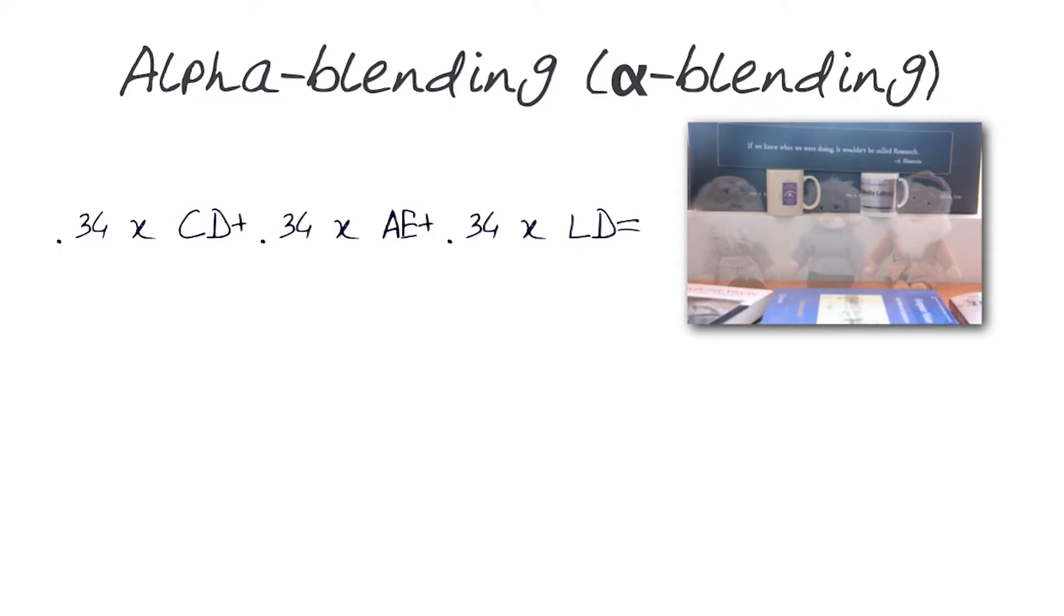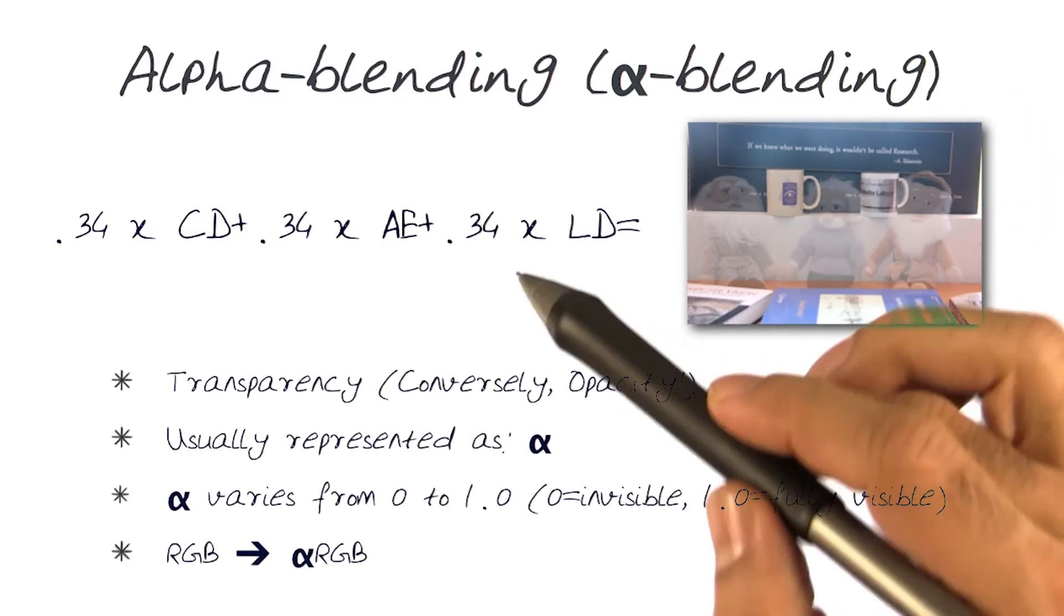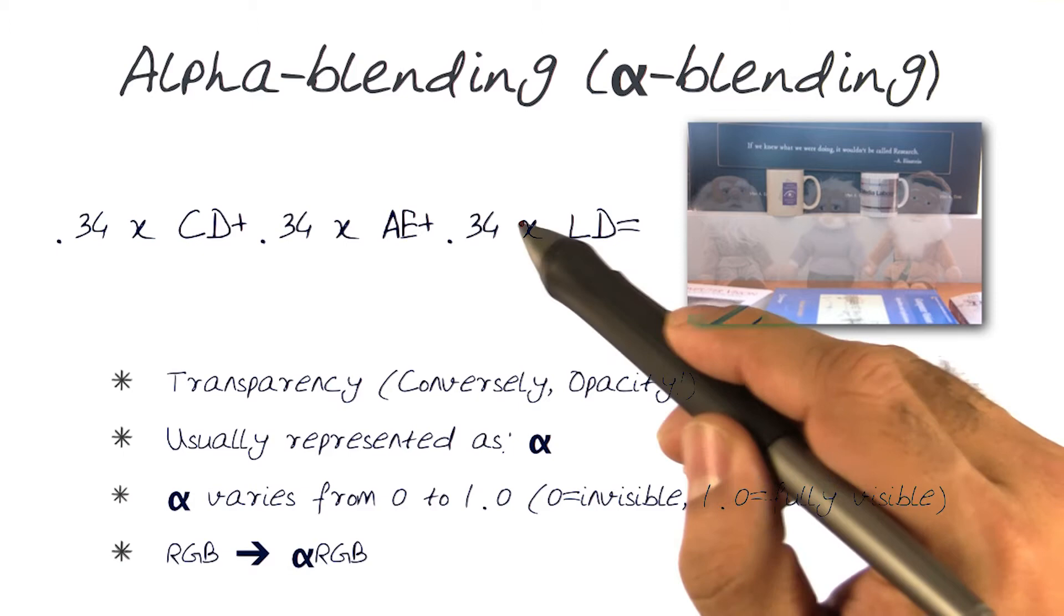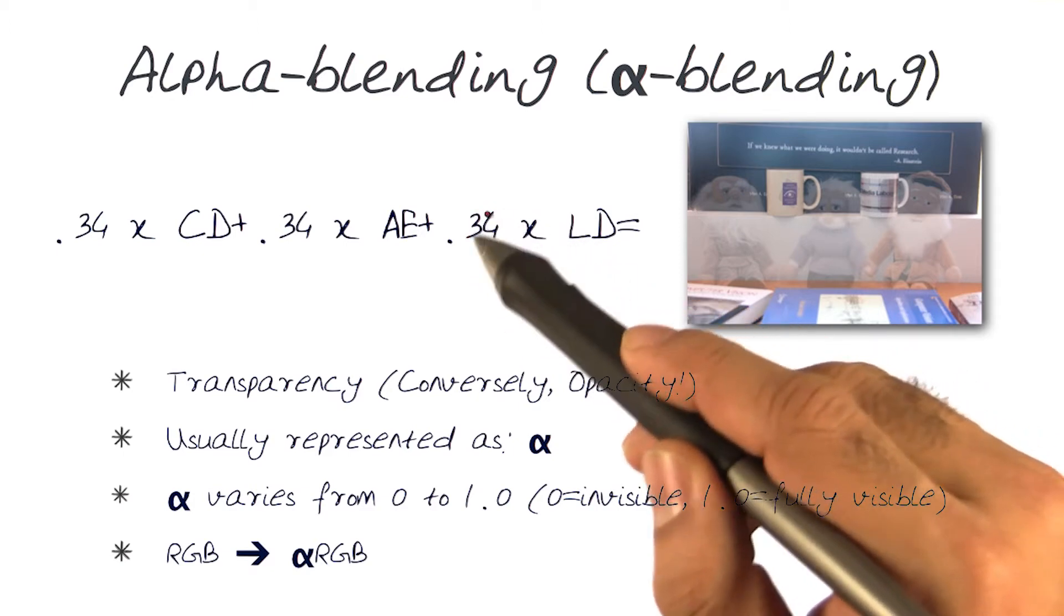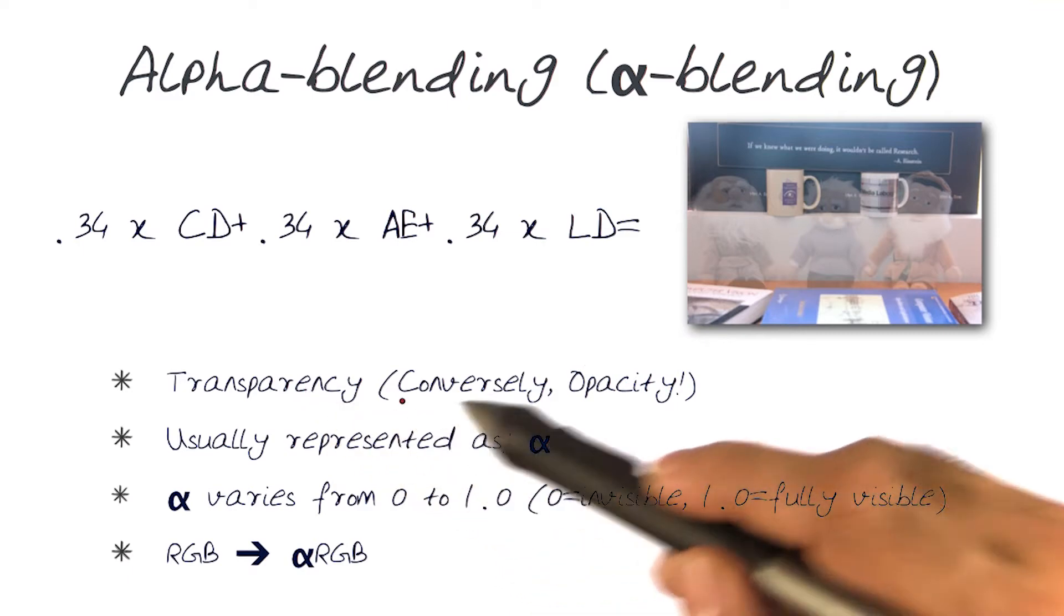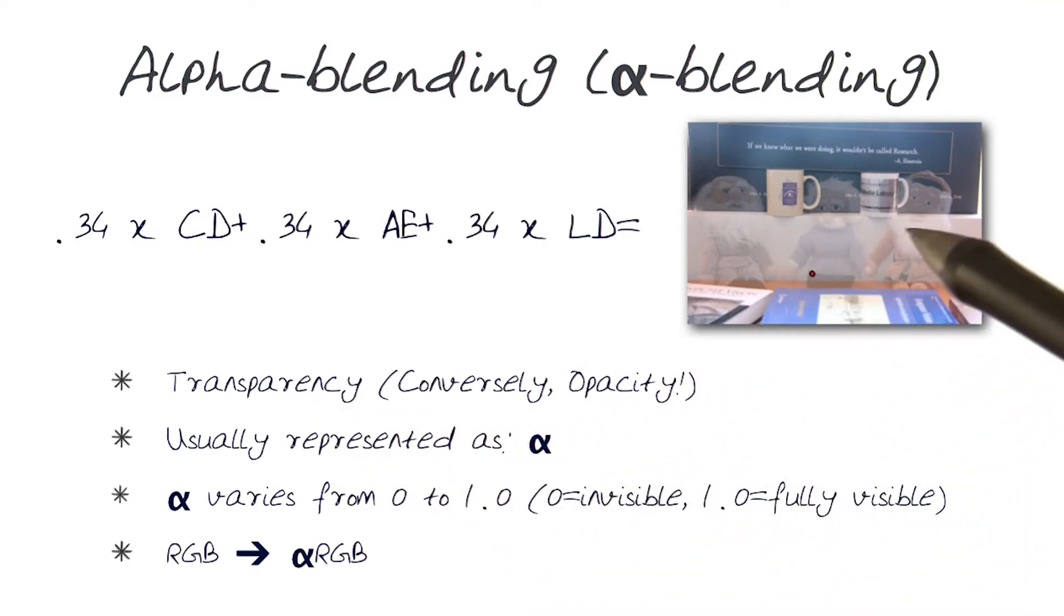This transparency introduces the term alpha blending. Let's see what that means. By doing a multiplication with 0.34 before each image, I've basically added a mixing of different types of things. What I've done is made the original image compared to the next one transparent by 34%.